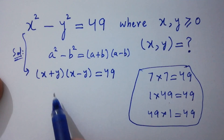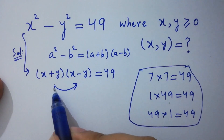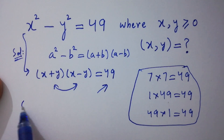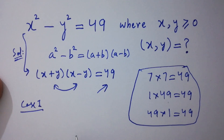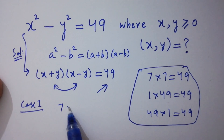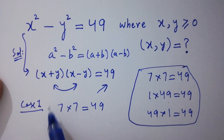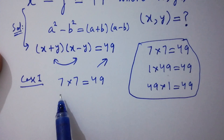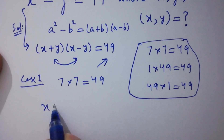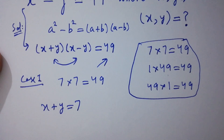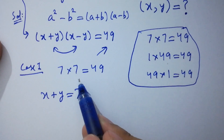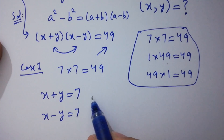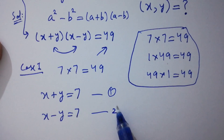By this factorization we get 49. Taking the first case, which is 7 times 7 equal to 49, and comparing, we have x plus y equal to 7 as the first equation, and x minus y equal to 7 as the second equation.